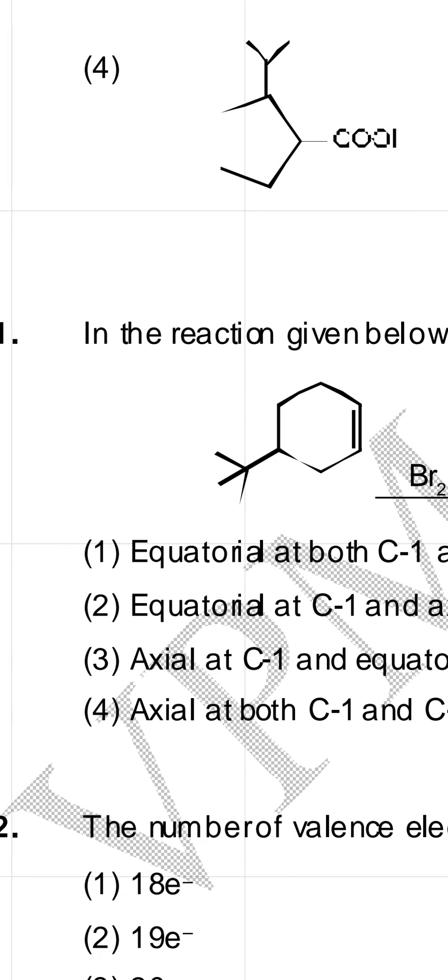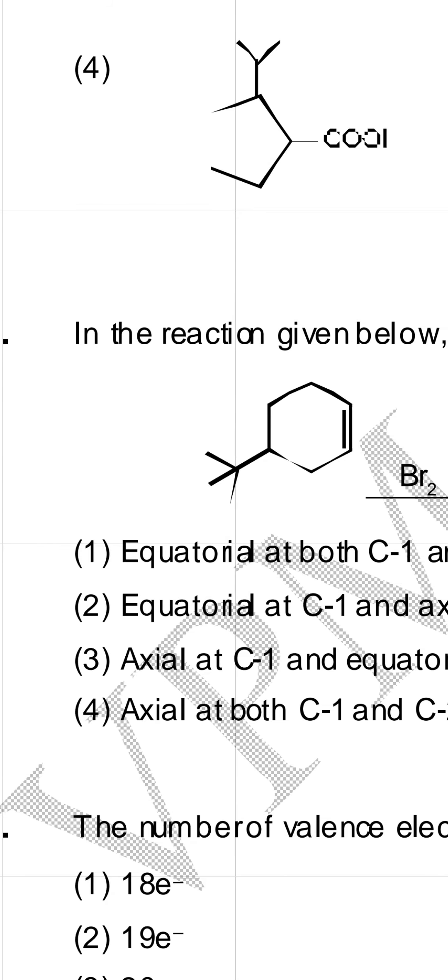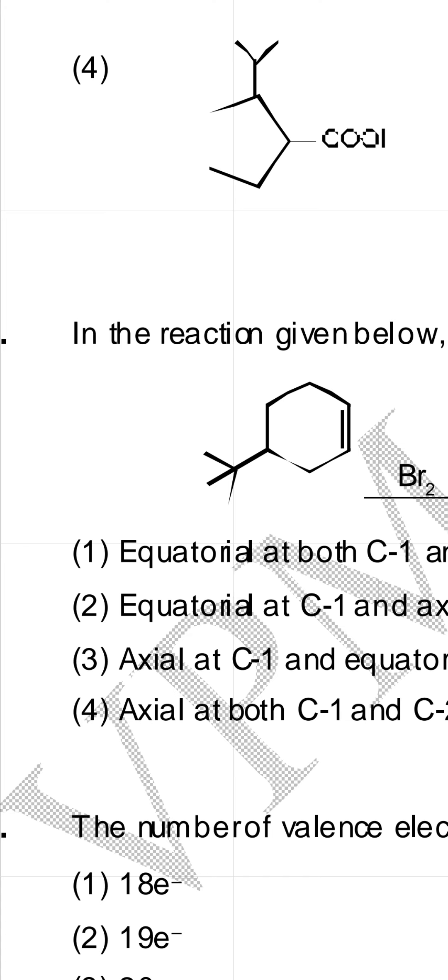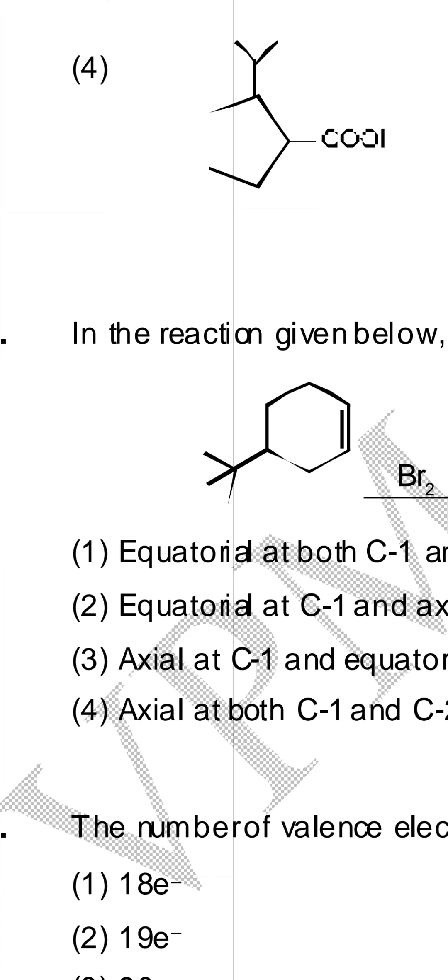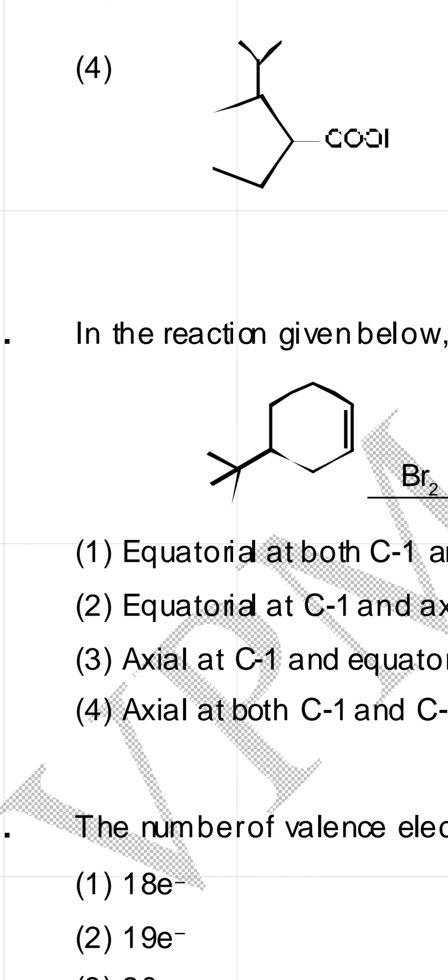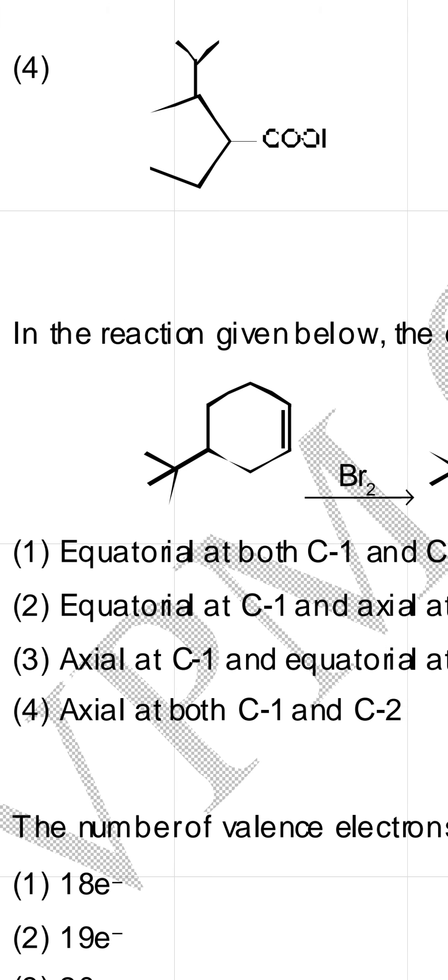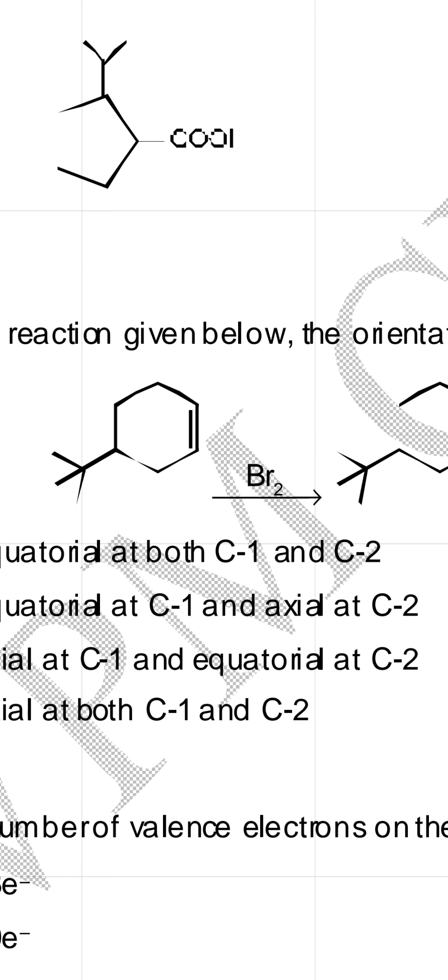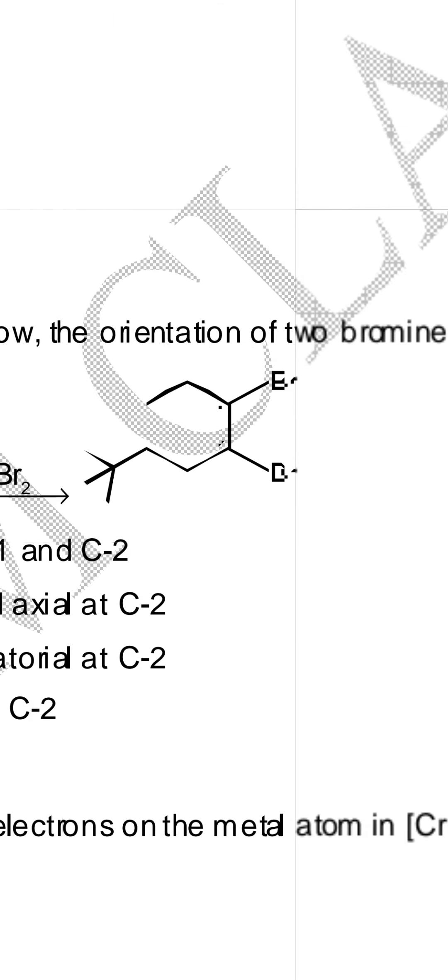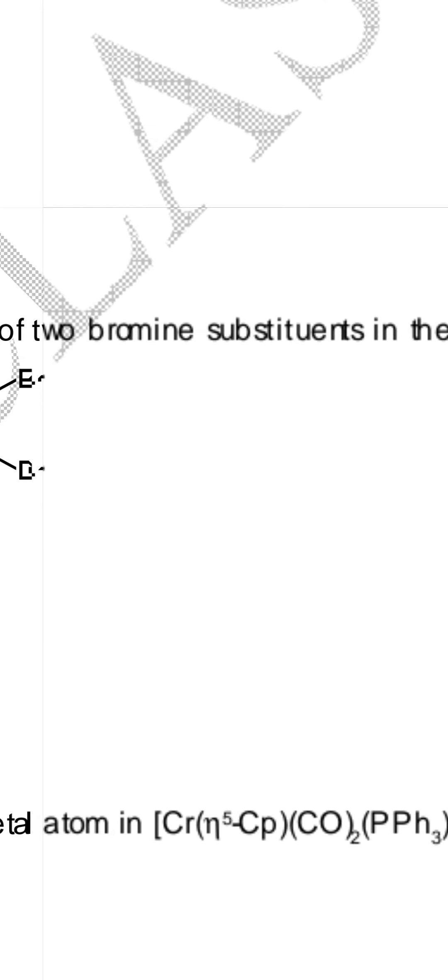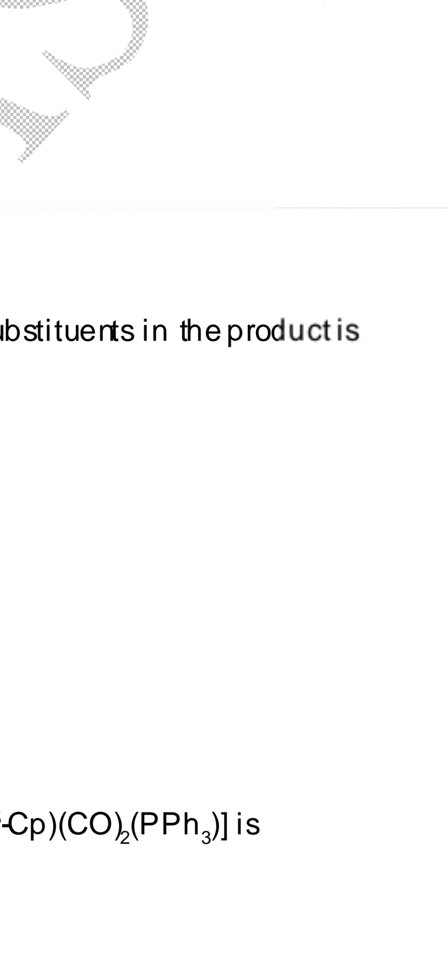This is question number 31. Maybe this number differs from question to question. The question is, in the reaction given below, the orientation of two bromine substituents in the product is,